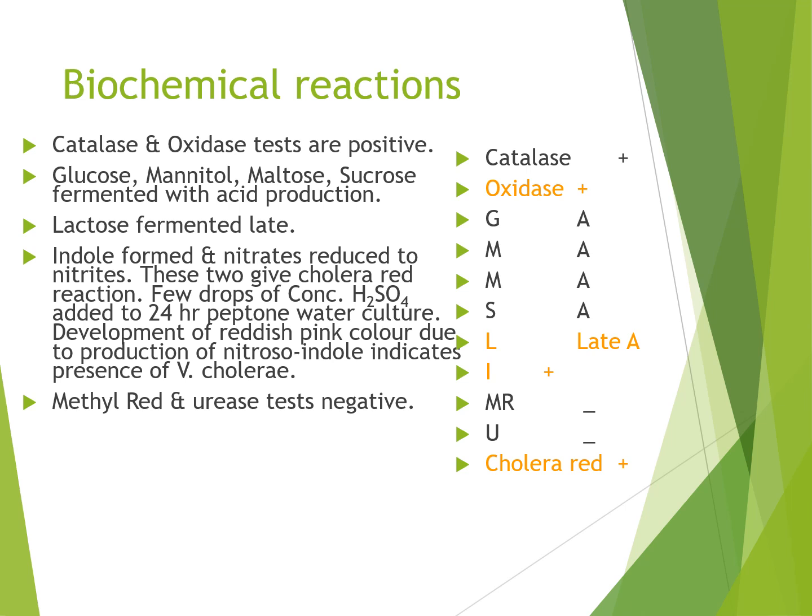Biochemical reactions: Vibrio cholera is catalase and oxidase positive. They ferment with acid production: glucose, mannitol, maltose, and sucrose. Lactose is fermented late, and indole is formed; nitrates are reduced to nitrites. The cholera red reaction is also positive: a few drops of concentrated sulfuric acid added to a 24-hour peptone water culture produces a reddish-pink color due to production of nitroso-indole, indicating the presence of Vibrio cholera.